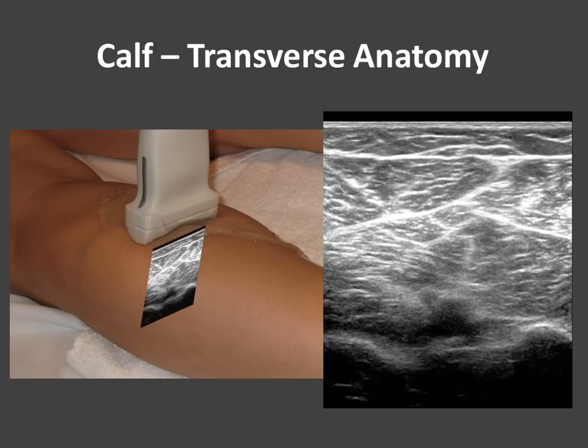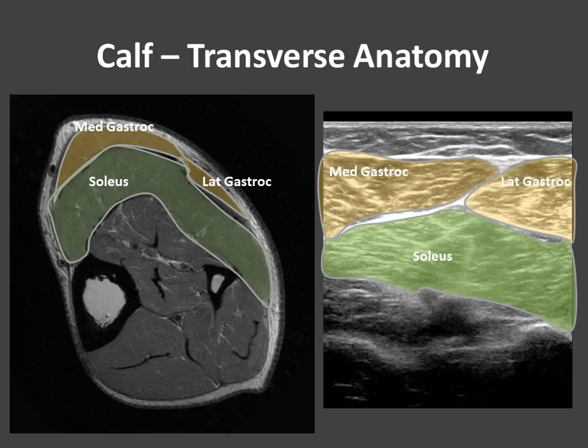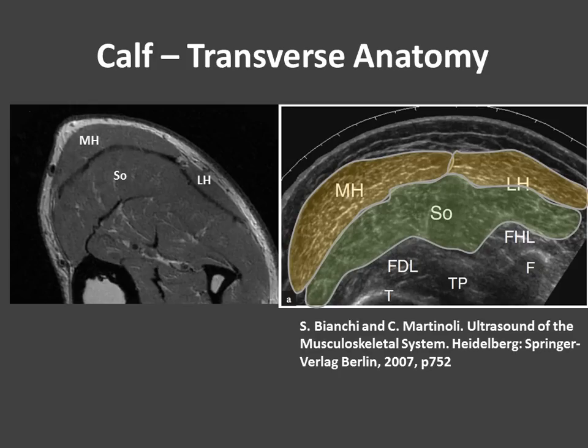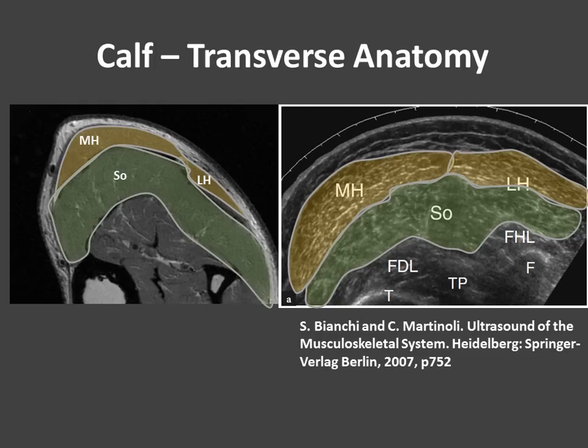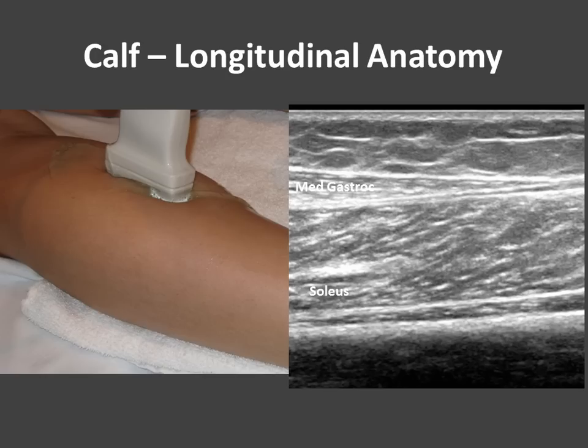If you place your probe in the transverse position along the posterior aspect of the calf, you'll wind up with an image like this. If you're familiar with MRI anatomy, it's not that different. We see the medial and lateral heads of the gastrocnemius muscles overlying the soleus. Here's a panoramic view of the posterior calf showing a similar orientation — again, the medial and lateral heads of the gastrocnemius overlying the soleus. We can follow these muscles and tendons up and down in the transverse position.